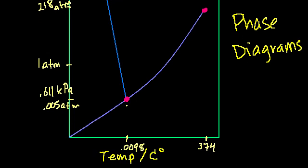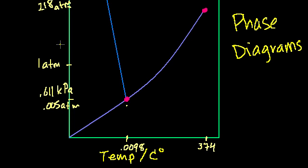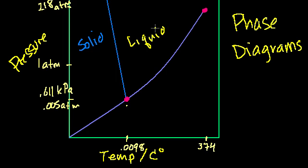And this is a phase diagram for water. So just to understand what's going on here is that on this axis I have pressure. On the x-axis I have temperature. And at any given point this diagram will tell you whether you're dealing with a solid, a liquid, or a gas.